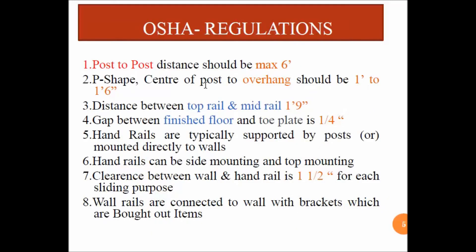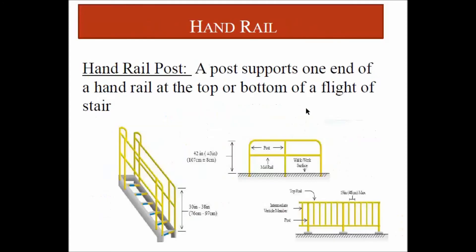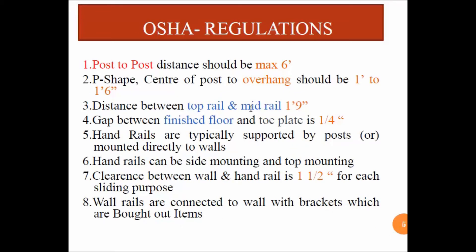As per OSHA regulations, the overhang should be limited to one foot to one foot six inches. The distance between the top rail and mid rail is one foot nine inches. We can see here that the distance between the top rail and mid rail is limited to one foot nine inches.